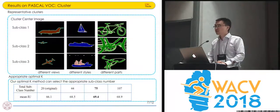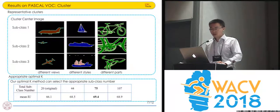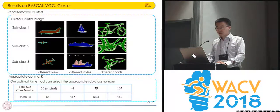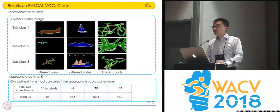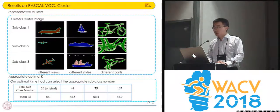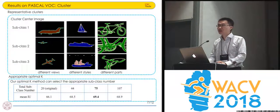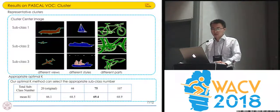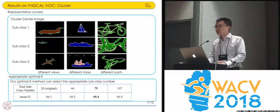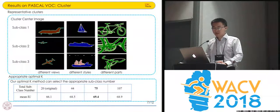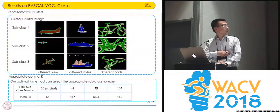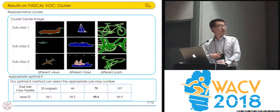We use k-means clustering to do the clustering, but we need to know the optimal subclass number. We use Hopkins statistics and the silhouette method to define the optimal subclass number. We show that 75 subclasses is the best to achieve the best results.